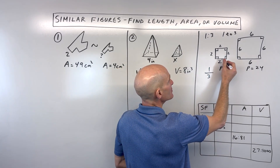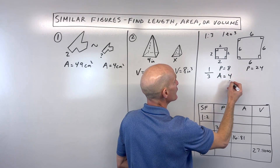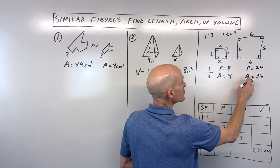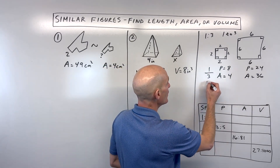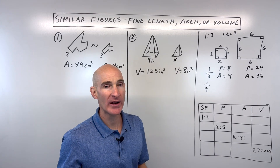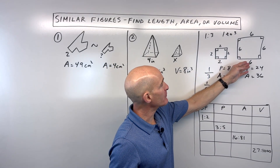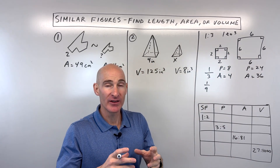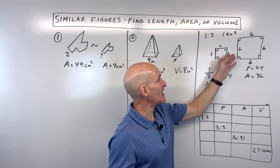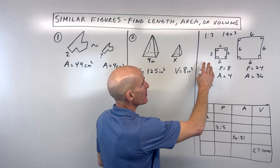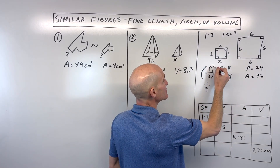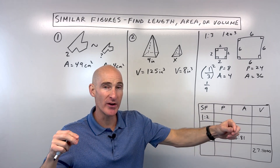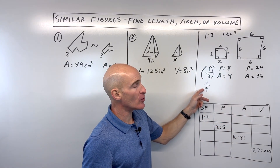For area: the smaller square is 2×2 = 4 square units; the larger is 6×6 = 36. The ratio 4/36 reduces to one-ninth. The scale factor is one-third, and one-third times one-third is one-ninth. So when comparing the ratio of areas, you square the scale factor, because area is two-dimensional — length times width.